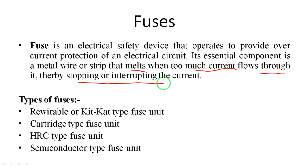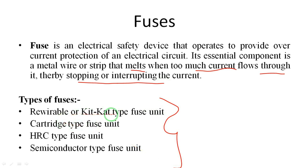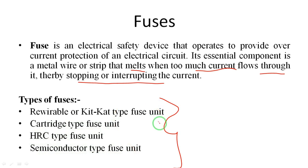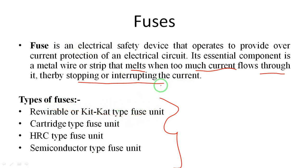Fuses are of many types. The main four types are: rewireable fuse or kitkat type fuse, cartridge type fuse, HRC type fuse, and semiconductor type fuse. These four types are very important. Now we will go to the rewireable or kitkat type fuse.